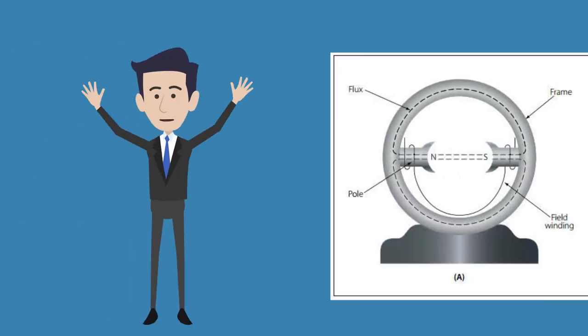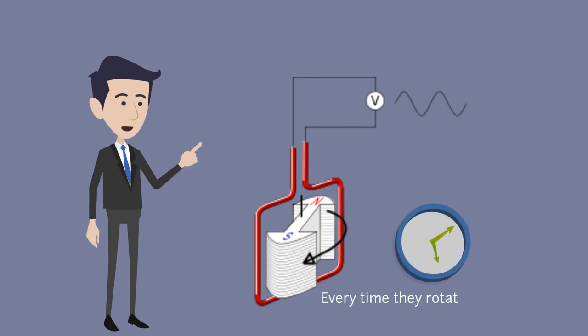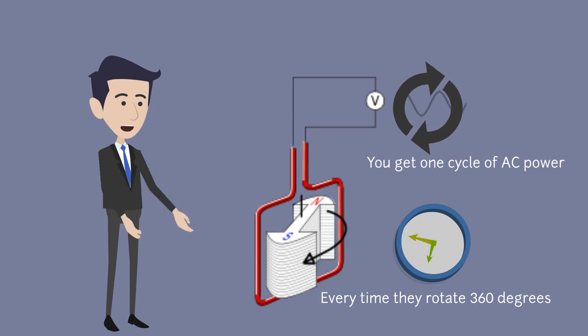Let's start with the 2-pole alternators. These machines have two magnetic poles, and every time they rotate 360 degrees, you get one cycle of AC power.